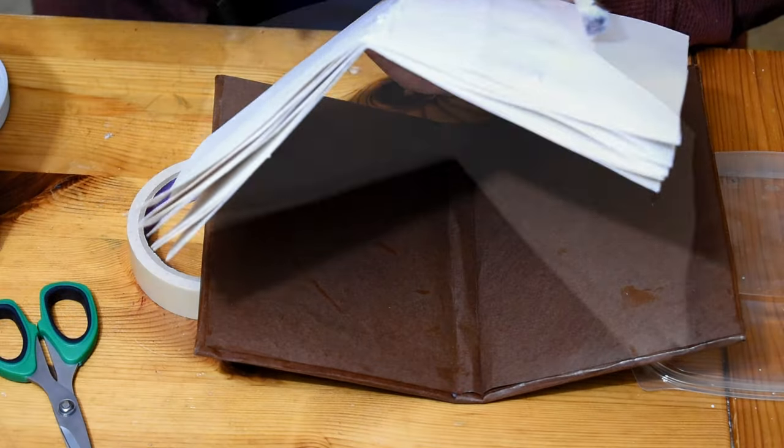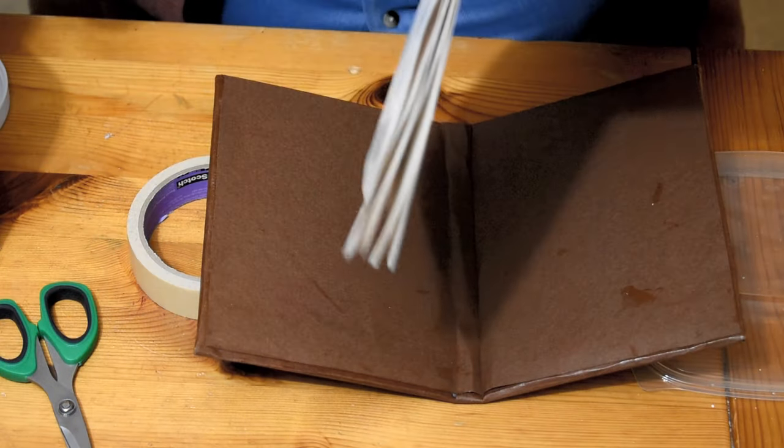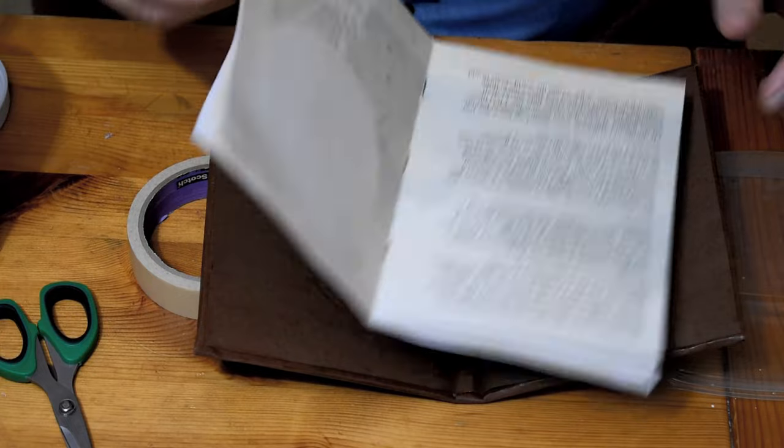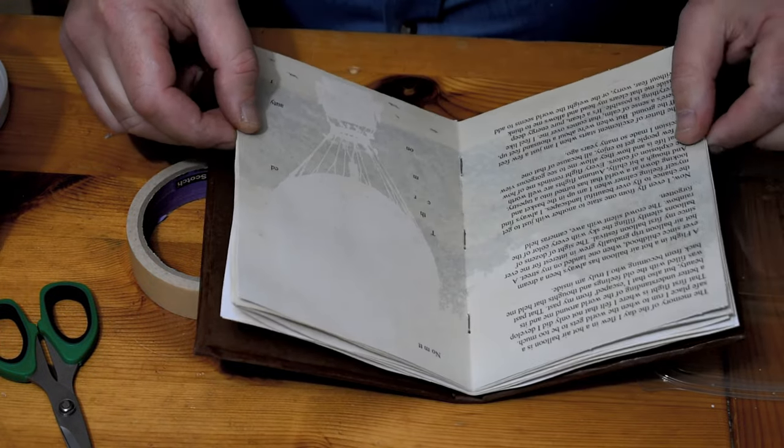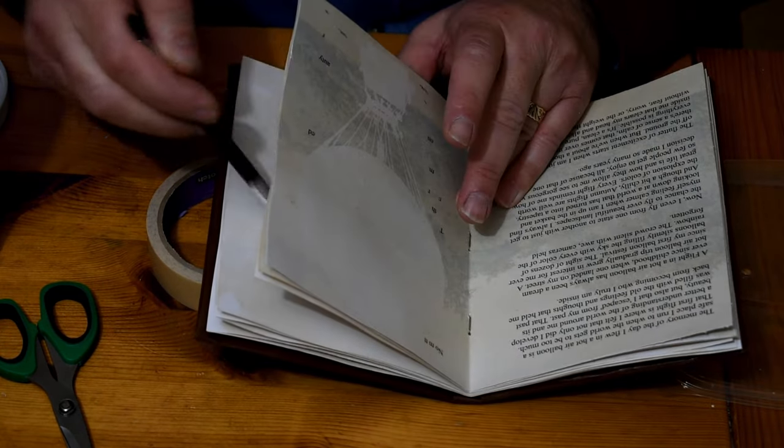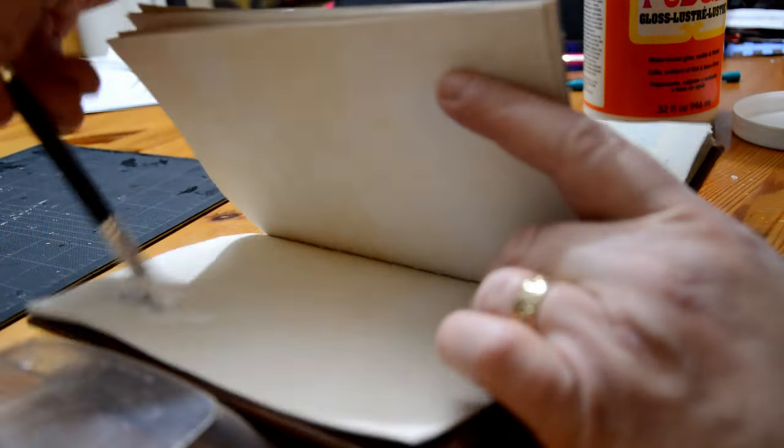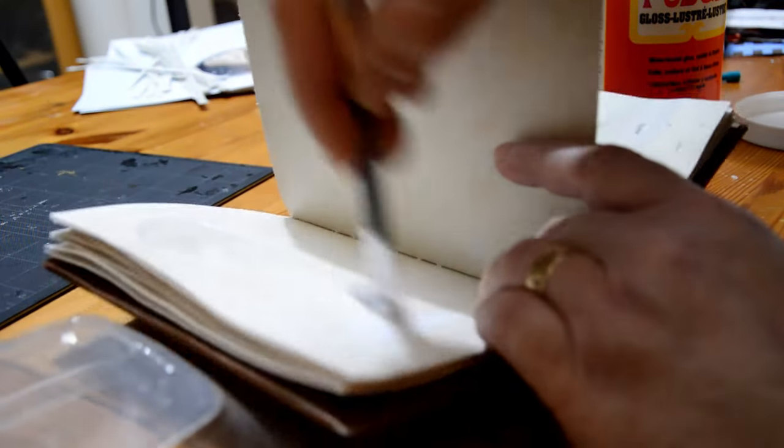With them sewn together, I'm using Mod Podge on the spine and the first pages to attach them to the cover. And then I'm going to strategically glue the pages at very specific spots, and that will both hold them together but also preserve some of that wrinkle.